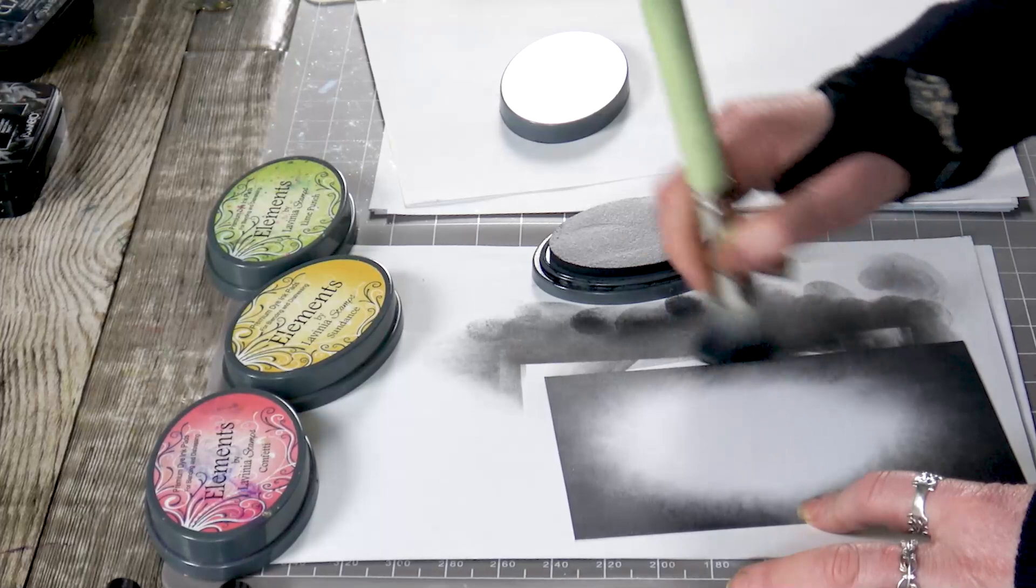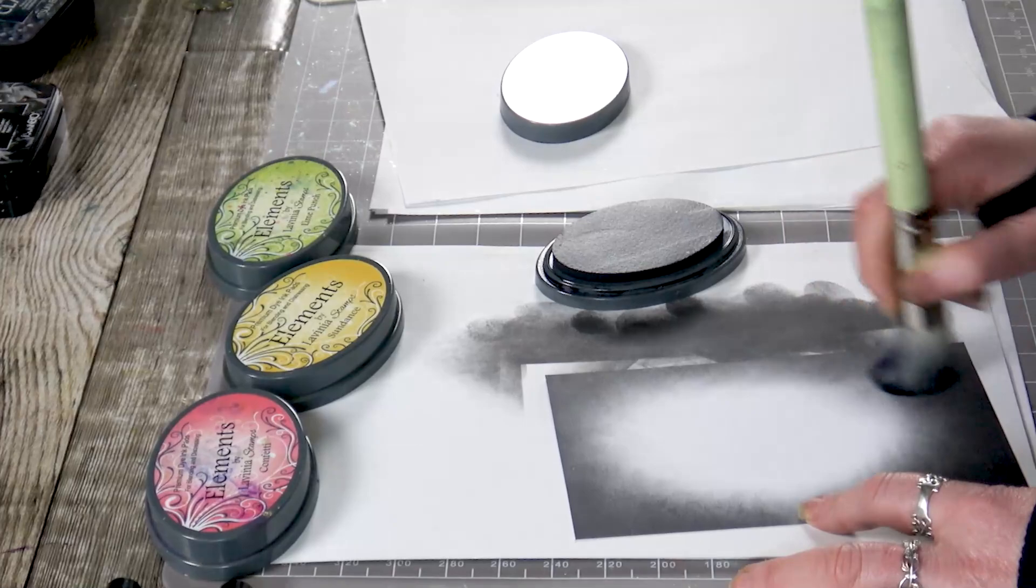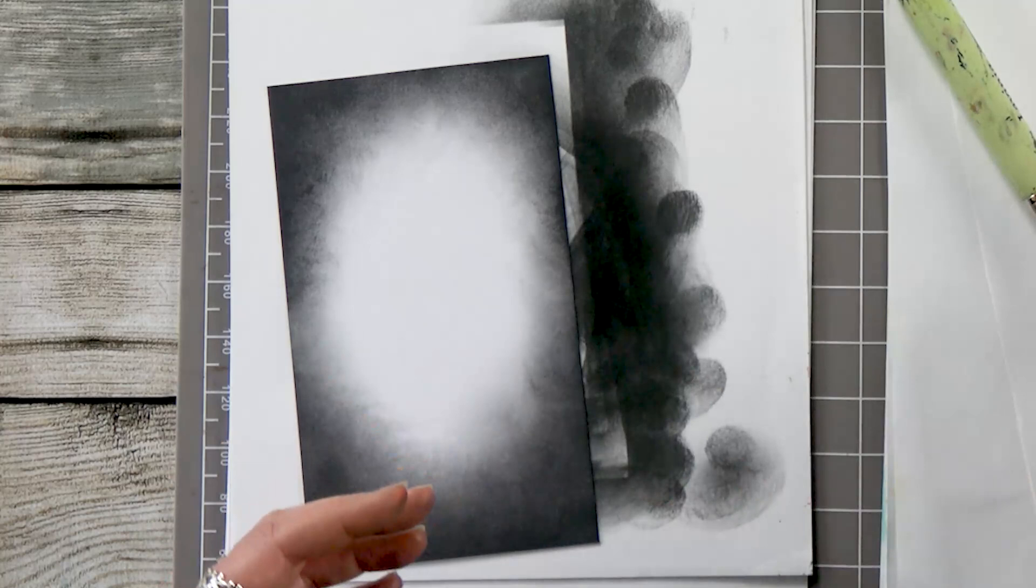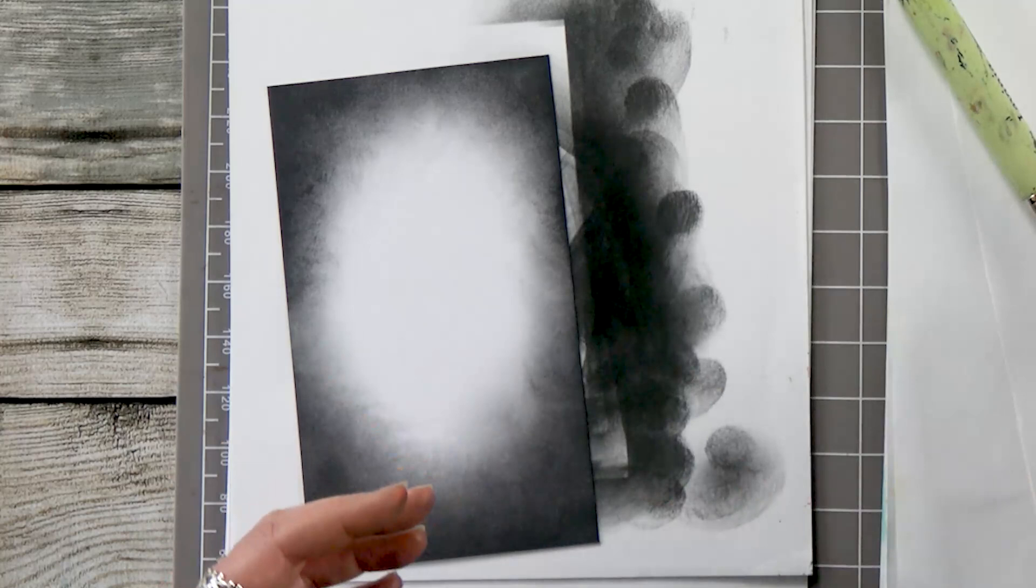Nearly there. We can always bring that graphite back in at the end if we want it to go a little bit darker again. Let's just pop that to the side and go with some of our brighter colours.